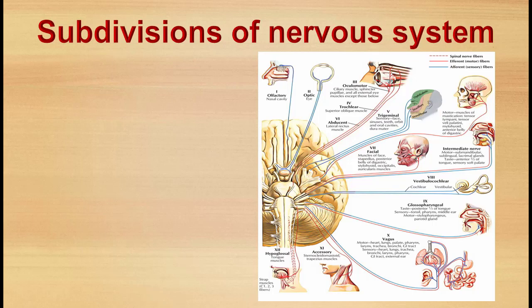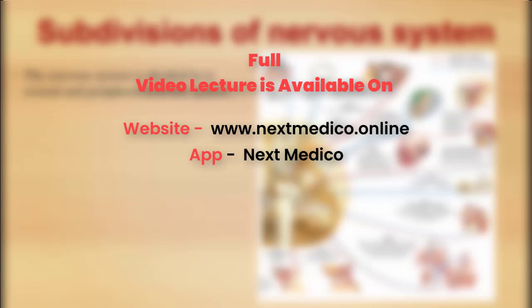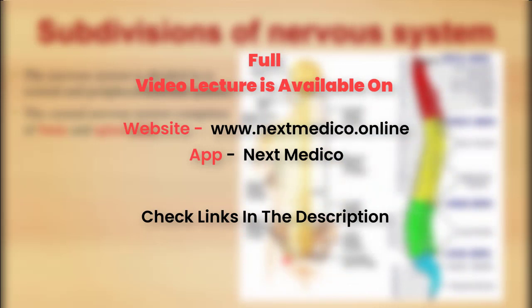The nervous system is broadly classified into the central nervous system and the peripheral nervous system. The central nervous system constitutes the brain and the spinal cord — including the cerebrum, cerebellum, brainstem — continuing down as the spinal cord, which is approximately 45 centimeters in length. The peripheral nervous system serves as a bridge between the central nervous system and the external environment.